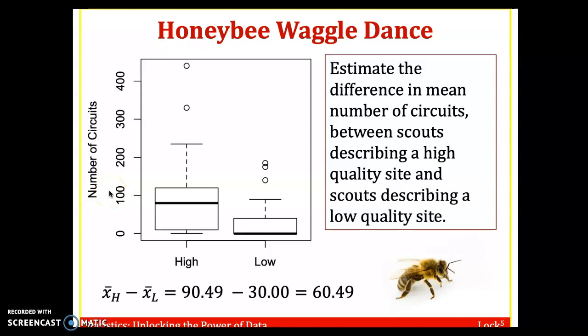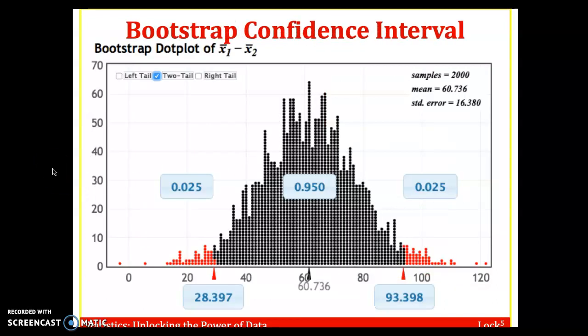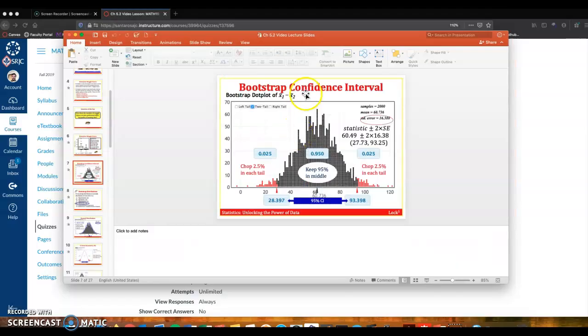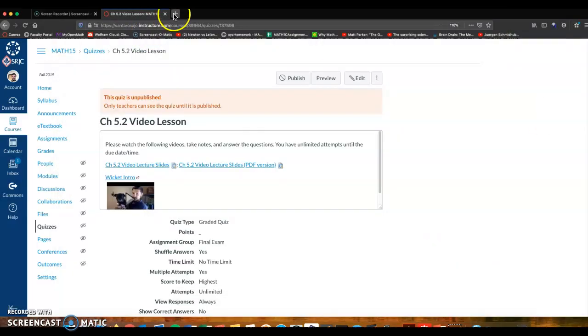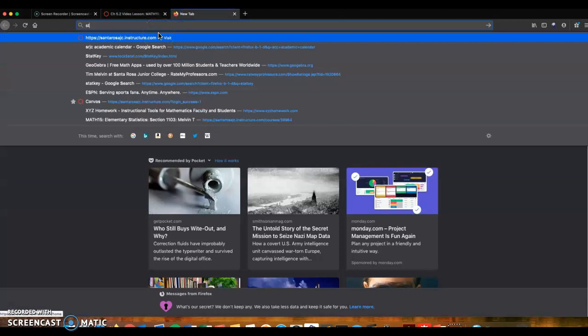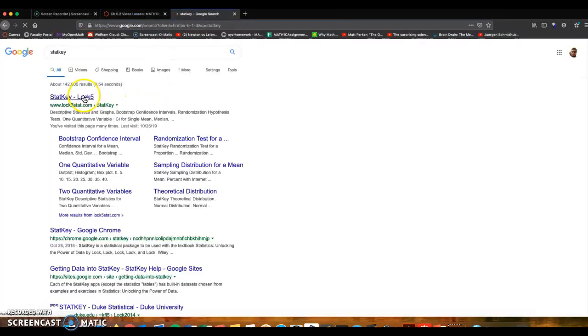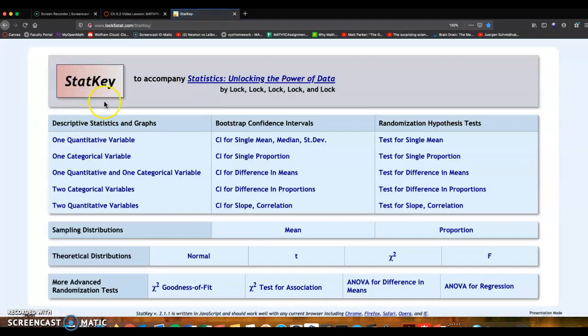So if we were going to create a confidence interval for the difference in the number of circuits from chapter three, we would go to StatKey. We have to upload the data. I'm not going to do that, but we're going to go to StatKey later. That would be the confidence interval for difference of means.